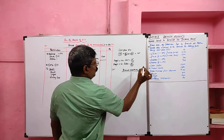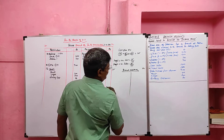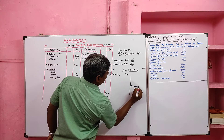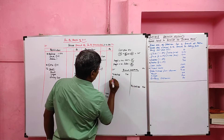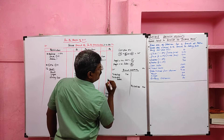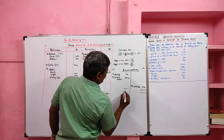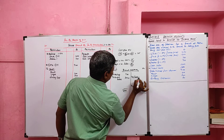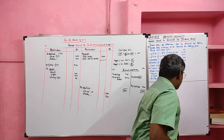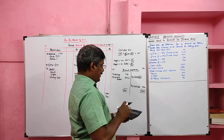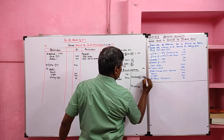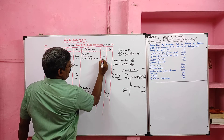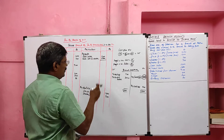We prepare the branch debtors account using information relating to debtors: opening balance debited at 700, closing balance credited at 900, and credit sales debited at 3,500. The debit side total is 4,200. Since debit exceeds credit, the balancing figure is cash received from debtors: 4,200 minus 900 equals 3,300. This is recorded on the credit side of the branch account under bank. Total of cash sales and cash collected from debtors is 8,700.